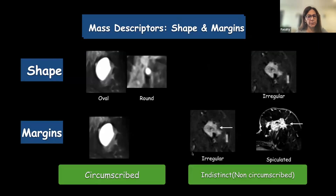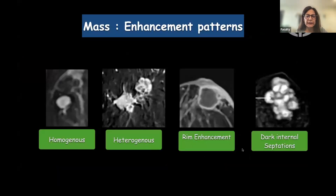When talking about a mass, we need to describe the shape and the margins. The shape can be oval, round, or irregular — the names are self-explanatory. The margins can be either circumscribed or non-circumscribed. Non-circumscribed is further divided into irregular or spiculated, just like in mammography. We also look at the enhancement pattern, which is unique to MRI.